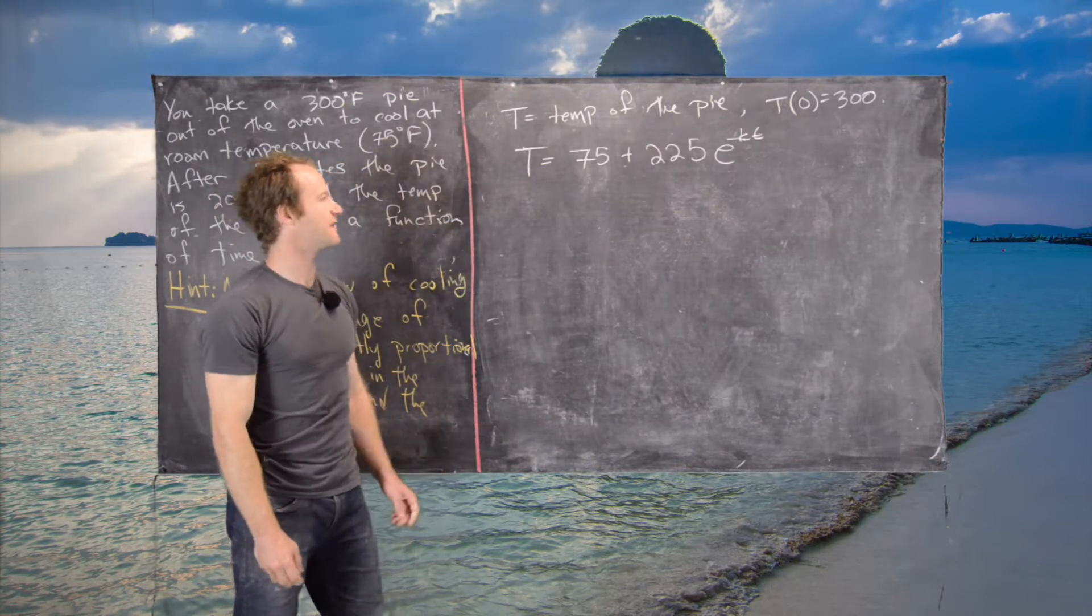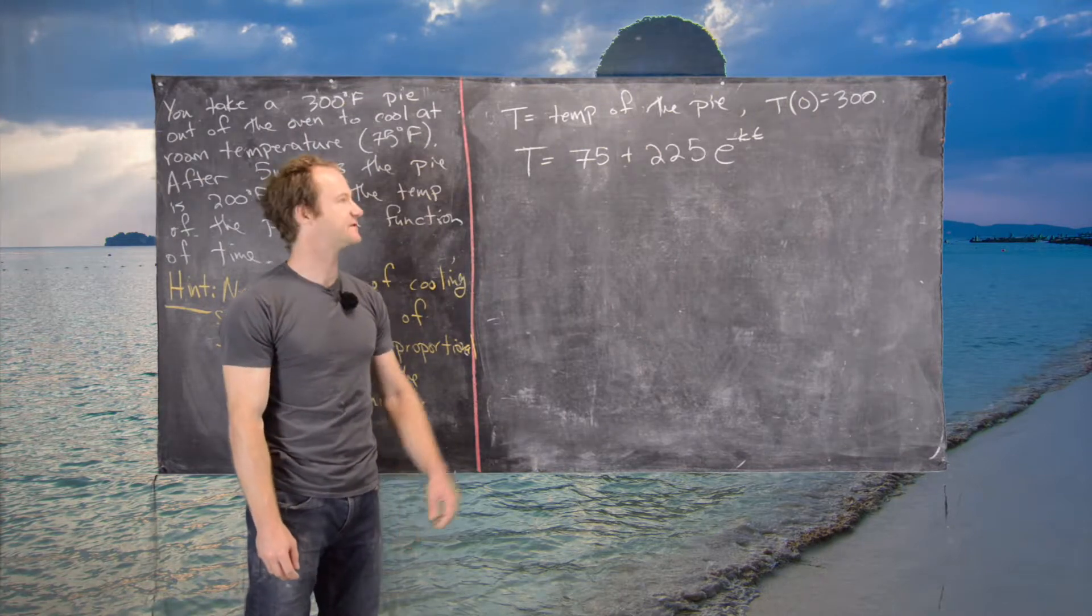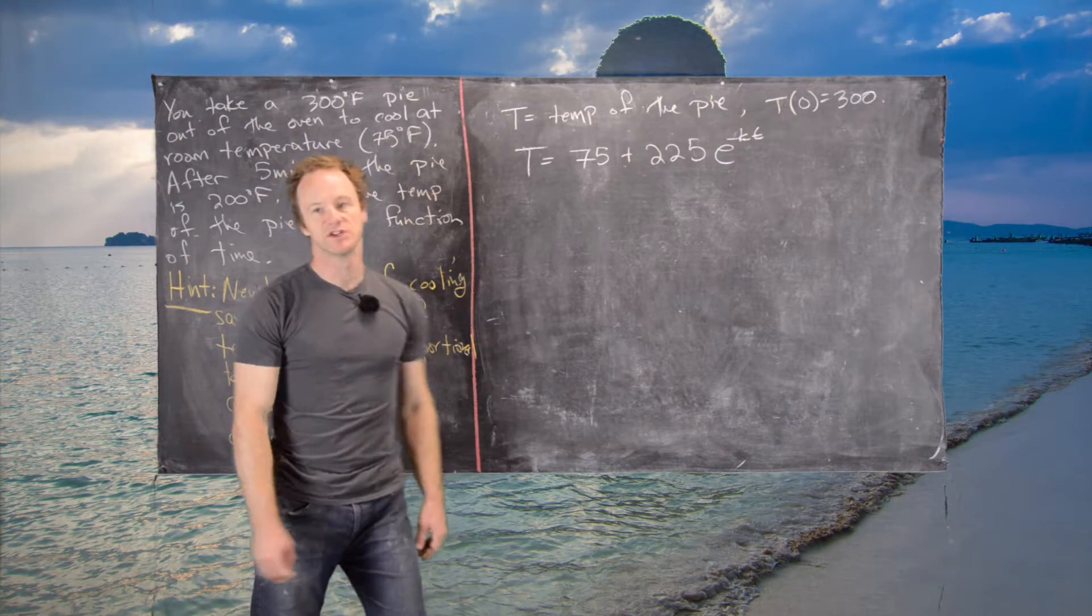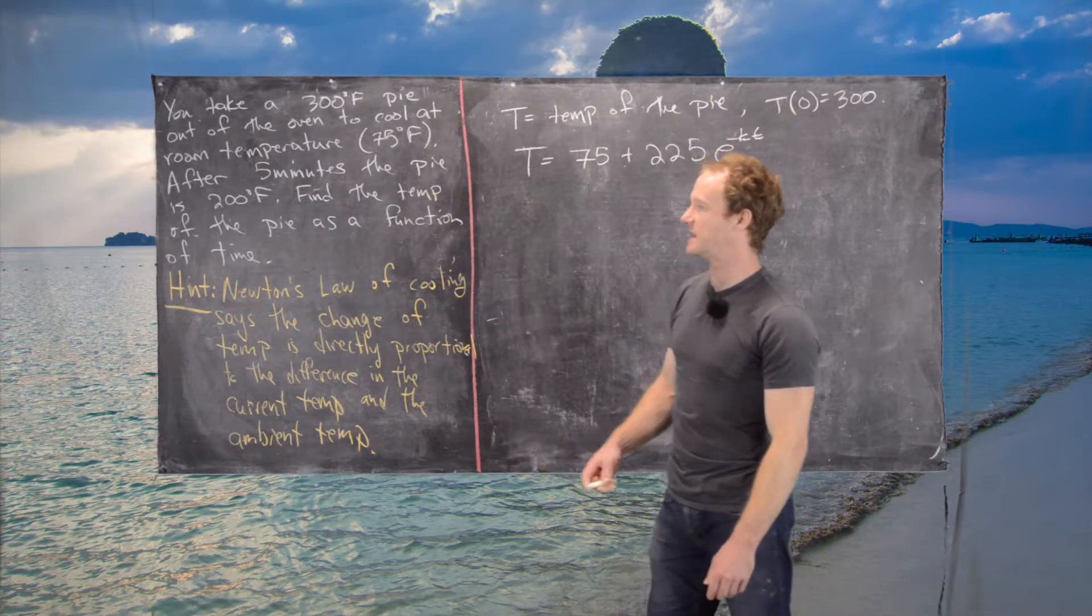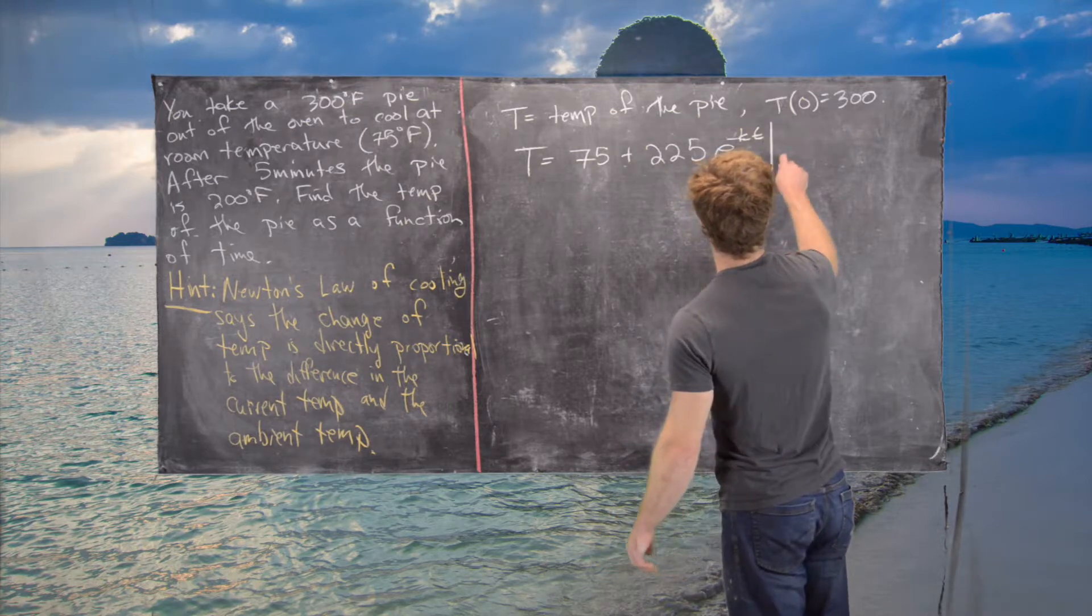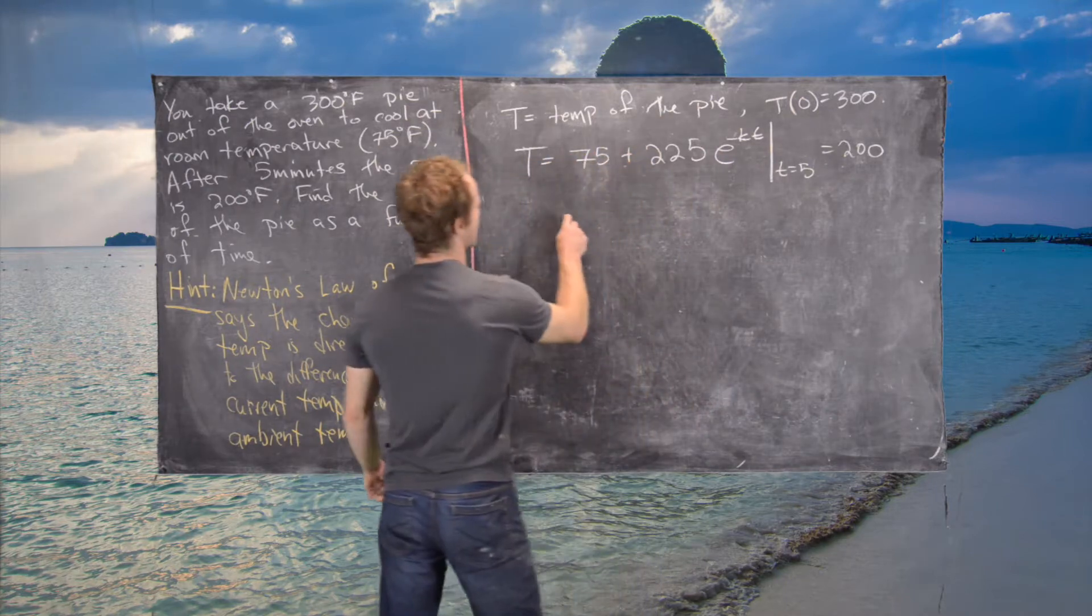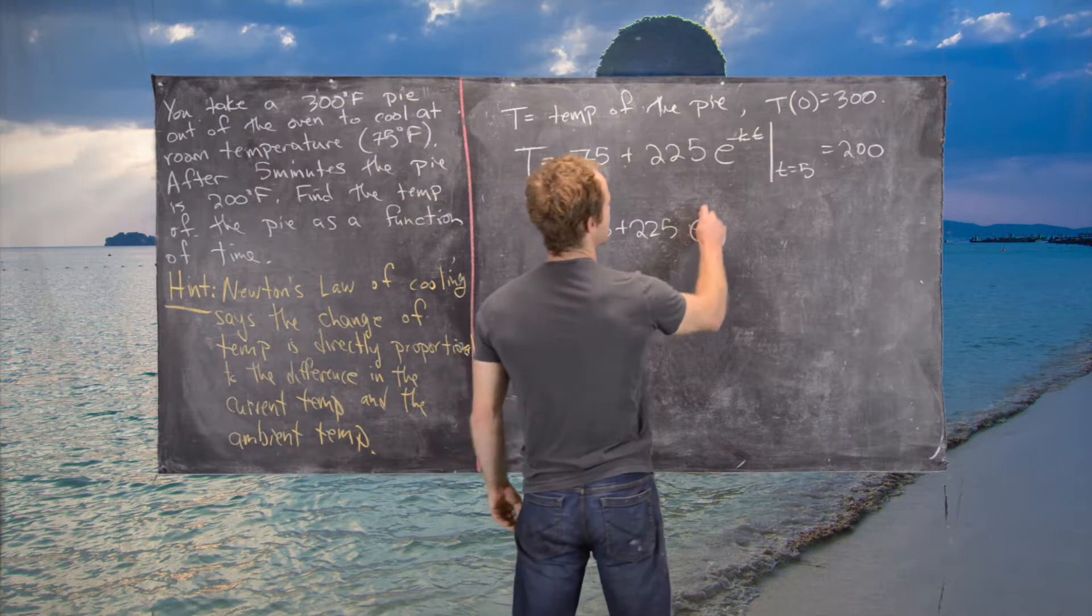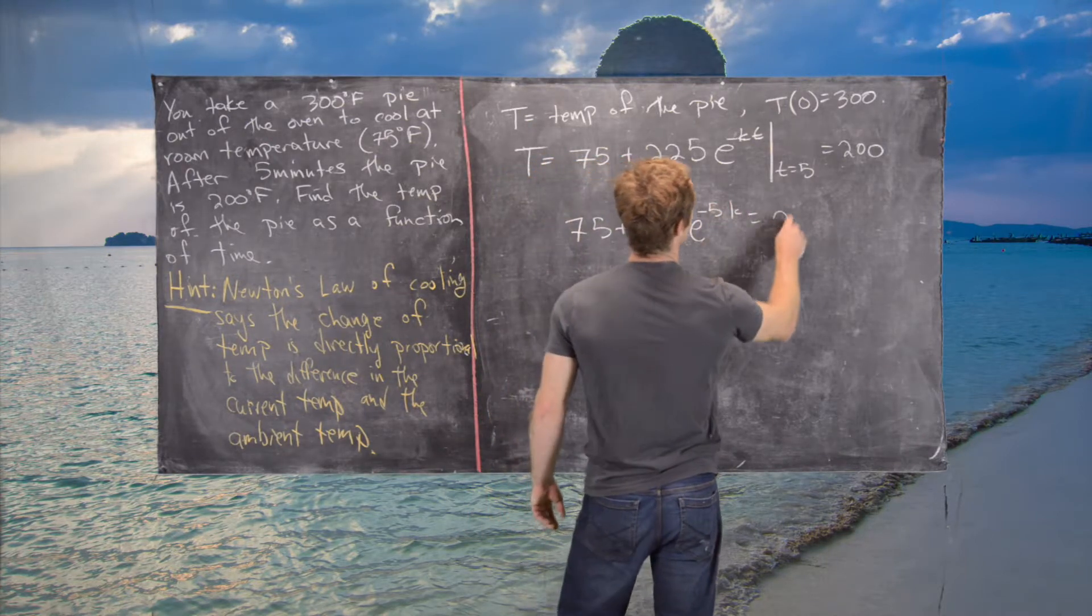Previously, we determined that T = 75 + 225e^(-Kt) describes the temperature of the pie. We have an undetermined constant K, so we can use our other data point. After five minutes, the temperature is 200, so plugging in t = 5 gives us 200.